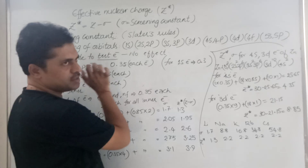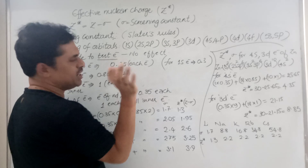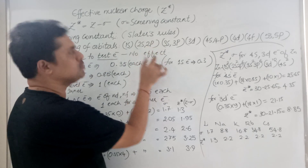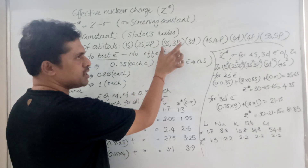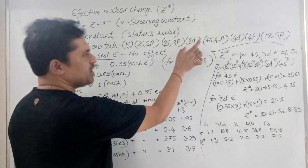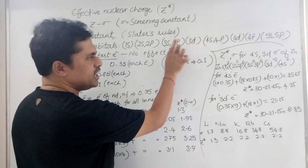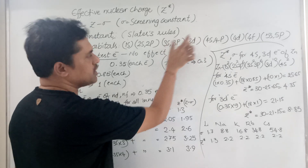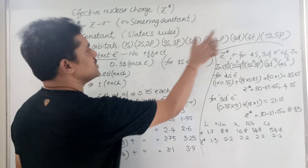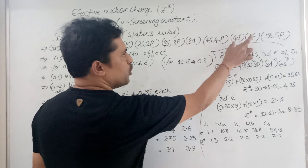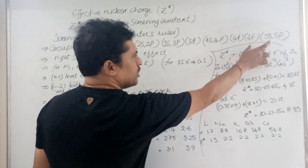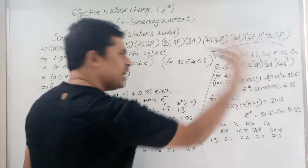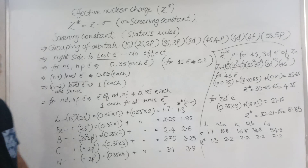The 1s orbital is very special. Then 2s and 2p orbitals are grouped together. Then 3s and 3p are separate, and 3d is separate. Then 4s, 4p are one group; 4d and 4f are separate. Similarly 5s, 5p together; 5d and 5f are separate like that.